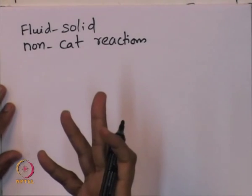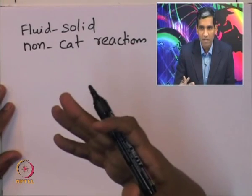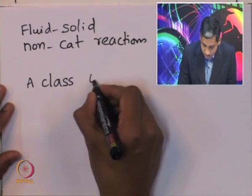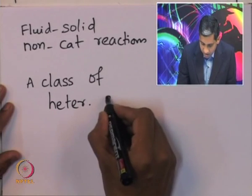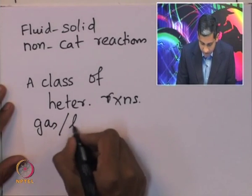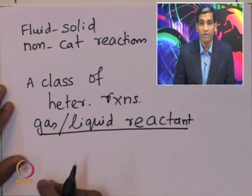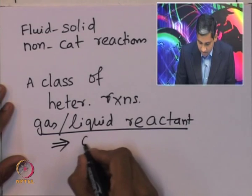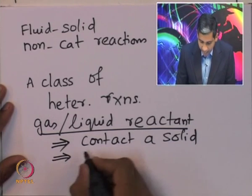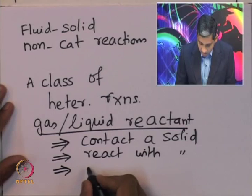These are essentially heterogeneous reactions where the gas or the liquid actually comes in contact with the solid and then reacts with the solid, transforming the reactants into products. These are a class of heterogeneous reactions where a gas or liquid reactant contacts a solid and then reacts to form products.